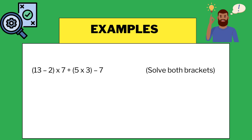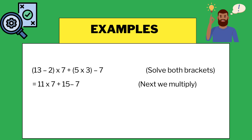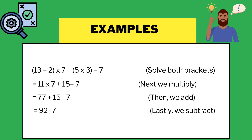One more example: (13 minus 2) times 7 plus (5 times 3) minus 7. There are two brackets, so we simplify them simultaneously: 13 minus 2 equals 11, and 5 times 3 equals 15, giving 11 times 7 plus 15 minus 7. Next, multiplication: 11 times 7 equals 77, reducing the expression to 77 plus 15 minus 7. Then 77 plus 15 equals 92, and 92 minus 7 gives the final answer 85.